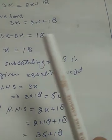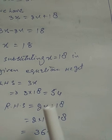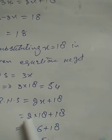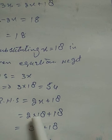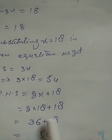Check: LHS is 3x. RHS is 2x plus 18. When x is 18, we get 2 into 18 plus 18. 2 times 18 is 36, plus 18.